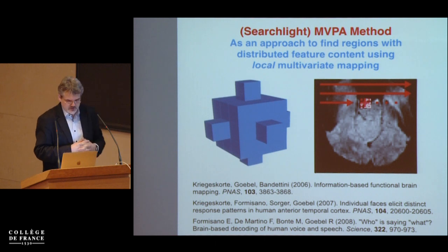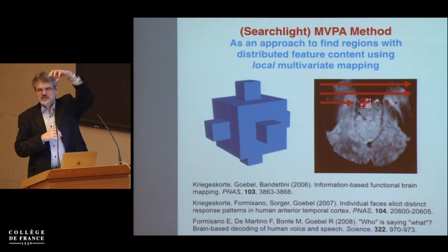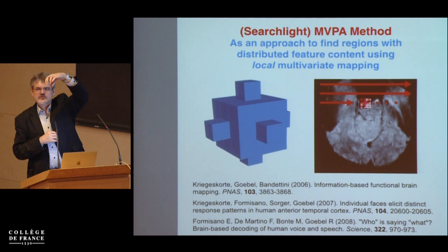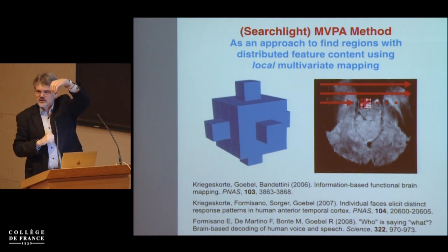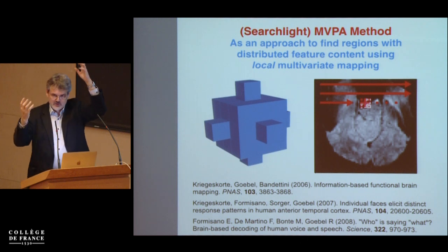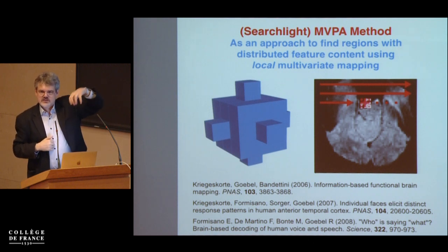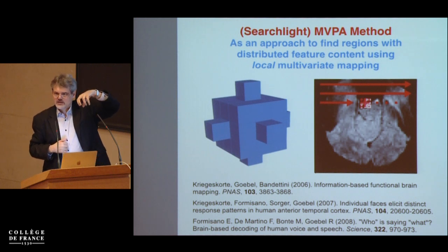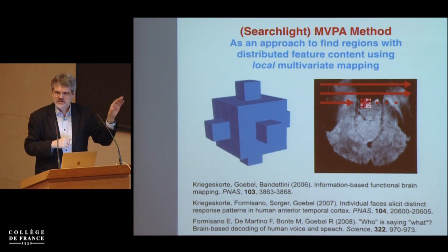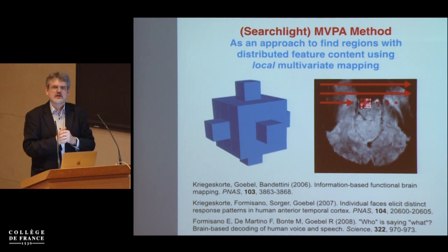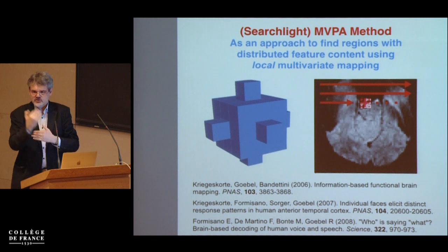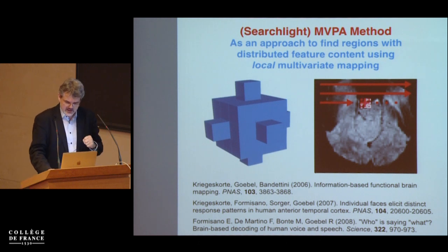Our early attempts, when Nico Kriegeskorte was in my lab, used classifiers at 3 Tesla. We ran a small spotlight multivariately through the brain to check whether it had the sensitivity to separate features within brain areas — for example, horizontal versus vertical orientations in the visual cortex. This had some success, but ultimately you still don't map features to voxels and can't generalize compositionality to new stimuli, so it was good but not sufficient for my purposes.